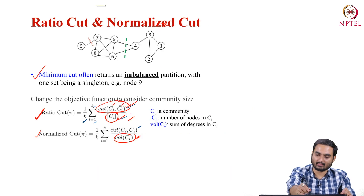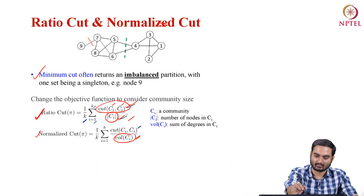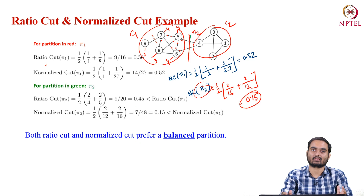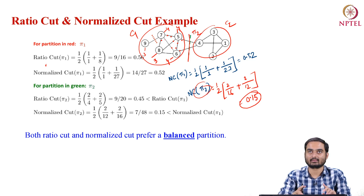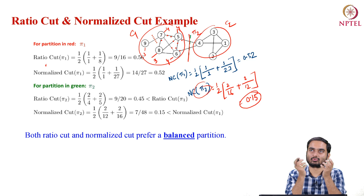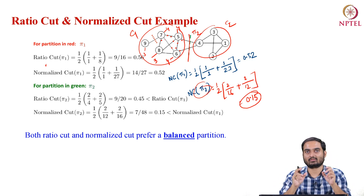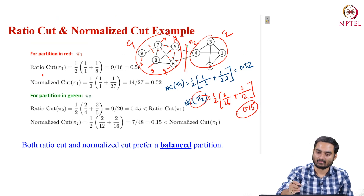The min-cut problem is also NP-complete, so we generally try to relax it. The definition of a community according to the cut perspective is that a community is a group of nodes where we only look at the edges across communities — it should be sparsely connected externally. Cut or ratio cut does not look at the internal structure within a community; it only looks at the structure across communities and tries to minimize it.